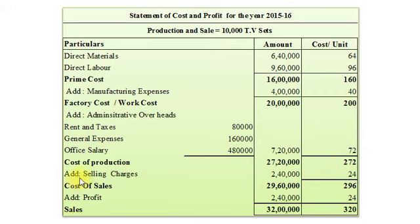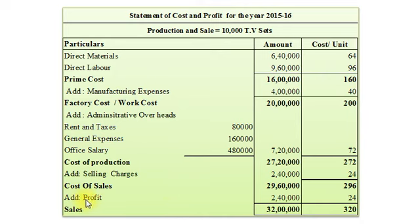Now we will add selling overheads or selling charges: Rs. 2,40,000 and per unit Rs. 24. So our Total Cost or Cost of Sale amounts to Rs. 29,60,000 and per unit Rs. 296. We will add profit — that is Net Profit as per the Profit and Loss account — Rs. 2,40,000 and per unit Rs. 24.